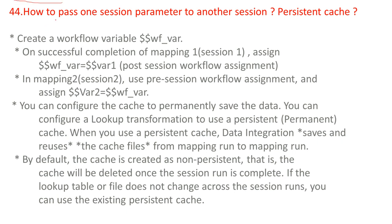How to pass one session parameter to another session? What is persistent cache? Create a workflow variable — we already know how to create variables and parameters. Variables can be declared with the $$ symbol. The workflow variable is $WF. For notation, we give WF_BAR. On successful completion of mapping 1 session 1, assign the workflow variable equal to the normal variable $$variable1. This will be assigned via the post-session workflow assignment in the properties. In mapping 2 session 2, use pre-session workflow assignment and assign $$variable equal to the workflow variable. Like this, we pass one session parameter to another session.